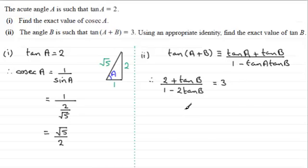So, it's just a question now of rearranging this to solve for tan B. And, I'm going to multiply both sides, then, by 1 minus 2 tan B. And, if I do that, we've got, therefore, 2 plus tan B equals 3 multiplied by 1 minus 2 tan B.